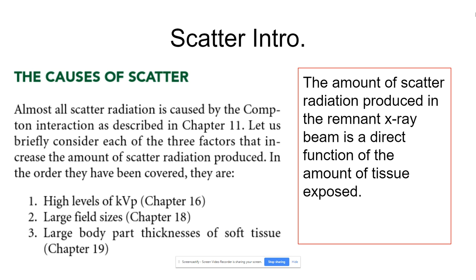So where is our scatter coming from? KV is the least important factor for scatter. Yes, you'll get a little bit more scatter when KV is increased, but remember we've talked about how using higher KV is a good thing — keep going with that. The slight increase of scatter when you increase KV is not a reason not to increase KV. Two and three are much bigger contributors. Number two, the largest one, is collimation — field size. This is a good reason to collimate, because not only do you reduce dose, but you reduce scatter, which destroys contrast. Always collimate as much as you can.